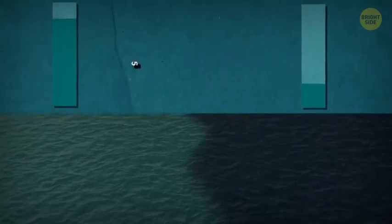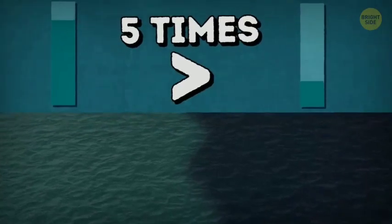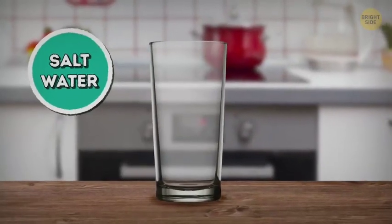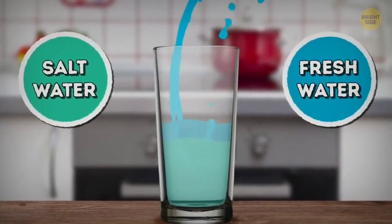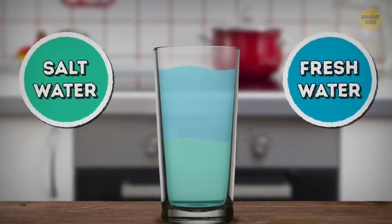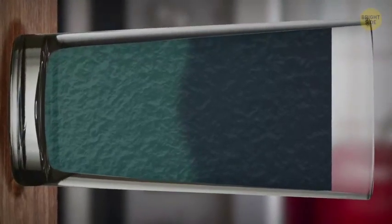Haloclines appear when the water in one ocean or sea is at least five times saltier than in the other. You can create a halocline at home if you pour some seawater or colored salty water in a glass and then add some fresh water on top of it. The only difference is that your halocline will be horizontal, and ocean haloclines are vertical.